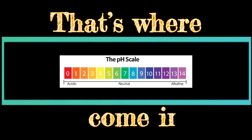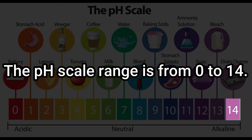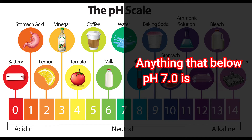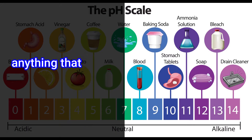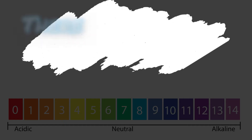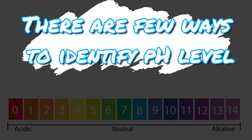That's where the pH scale comes in. The pH scale ranges from 0 to 14. Anything below pH 7 is acidic, and anything above pH 7 is alkaline. There are a few ways to identify pH level: 1. Litmus paper, 2. pH meter.